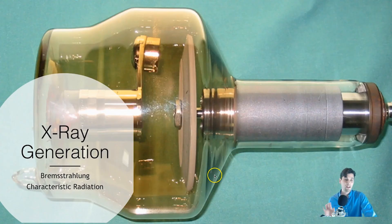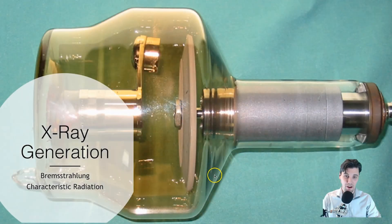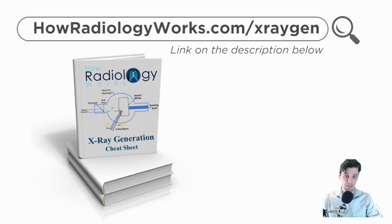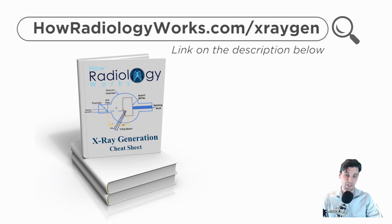We talked about Bremsstrahlung and characteristic radiation — those are the mechanisms by which x-rays are generated for diagnostic x-ray imaging and diagnostic CT imaging. Thanks again for watching. This has been Brian Nett with HowRadiologyWorks.com. Let me know what your favorite part about the x-ray generation process is. Also, head over to HowRadiologyWorks.com/x-raygen — that's x-ray and then G-E-N for x-ray generation — where you can download a PDF cheat sheet with the information you need about x-ray generation and the x-ray tube.